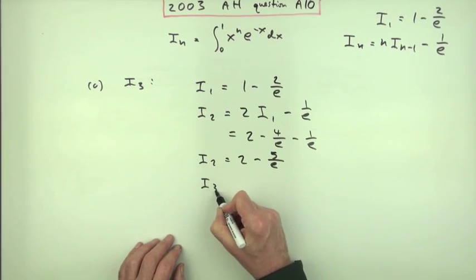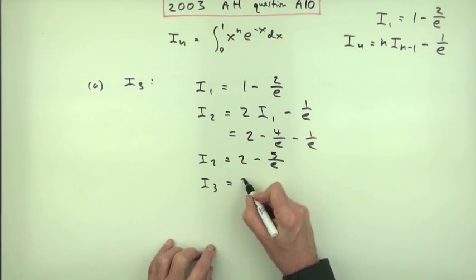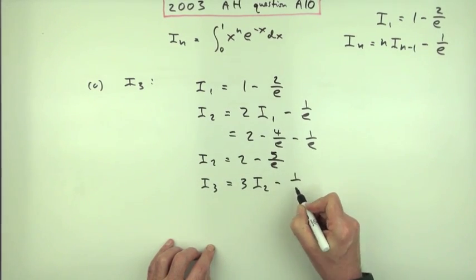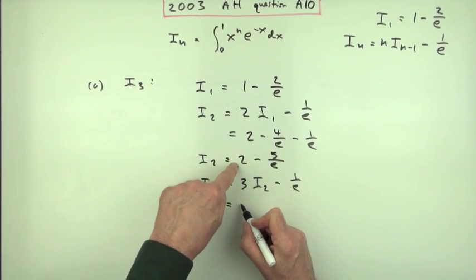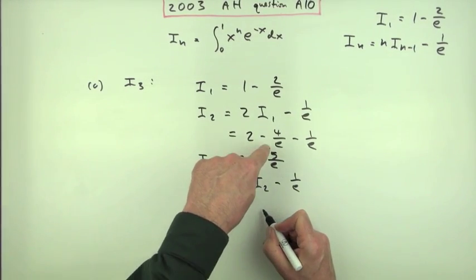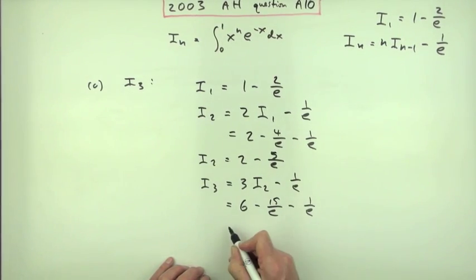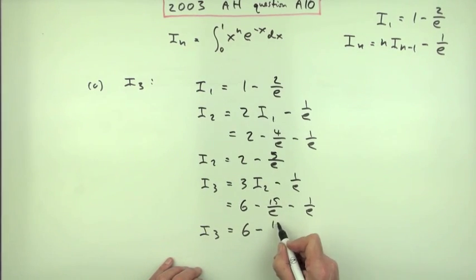And then the one that I actually want is i₃. So i₃ will be 3 times i₁ less than it, i₂ minus 1 over e. So it'll be 3 times this. So it'll be 3 2s are 6, minus 3 5s are 15, minus 1 over e. Which means that i₃ is finally 6 minus, and that'll be 16 eth, 6 minus 16 over e.